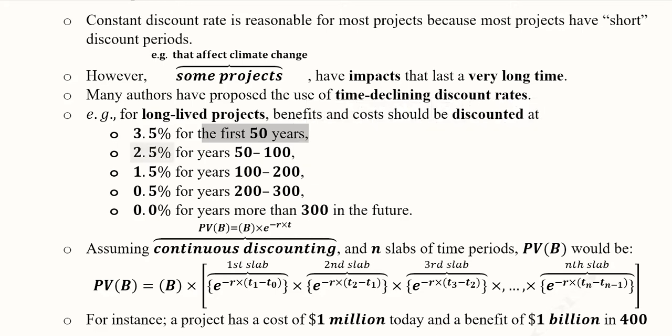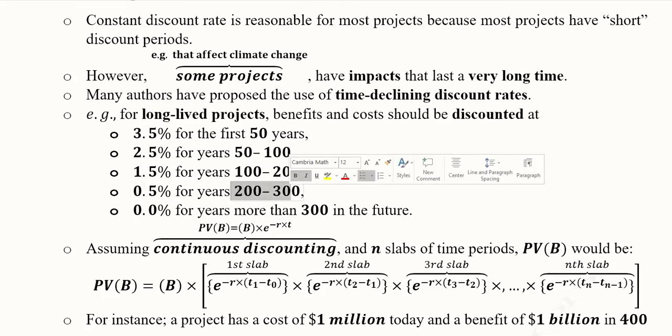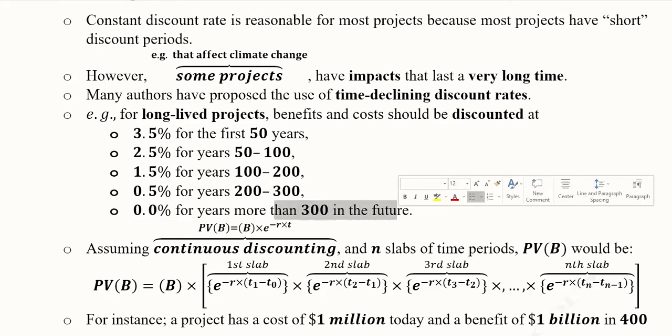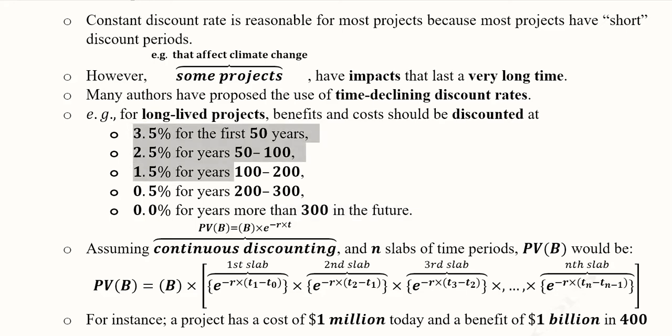But when the first 50 years are exhausted, 2.5% is used as a discount rate for the next 50 years, and then 1.5% is used for the next 100 years, and then 0.5% for the next 100 years, and 0% for the next remaining years after year 300.